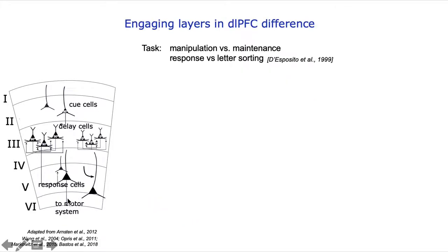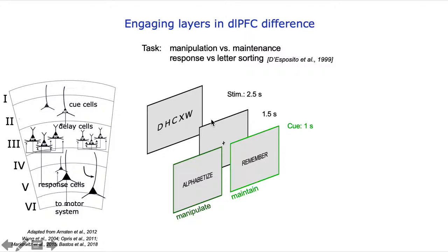For our study here in humans, Emily Finn found an old task of letter string sorting which should engage the individual layers differently. Participants see these strings of letters and need to memorize them. A short while later, there are cues to either maintain the order of the letters in working memory or sort these letters in their mind according to alphabetical order.